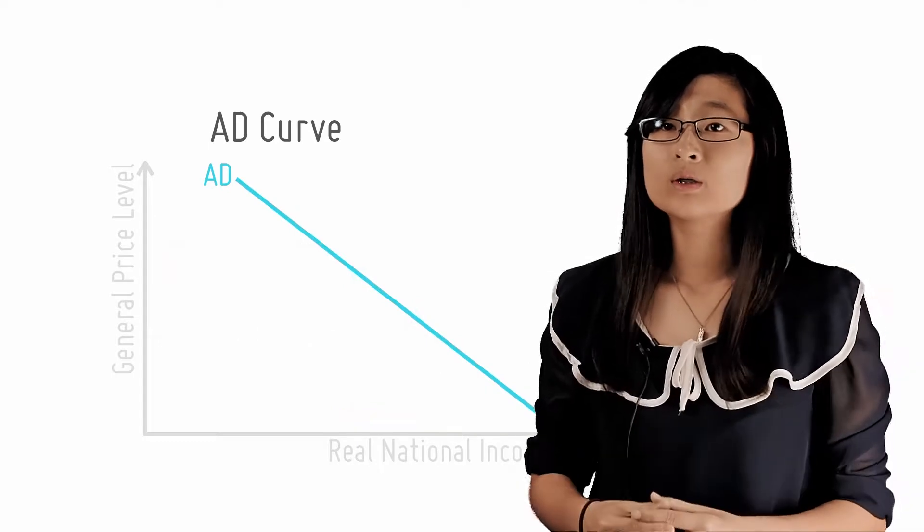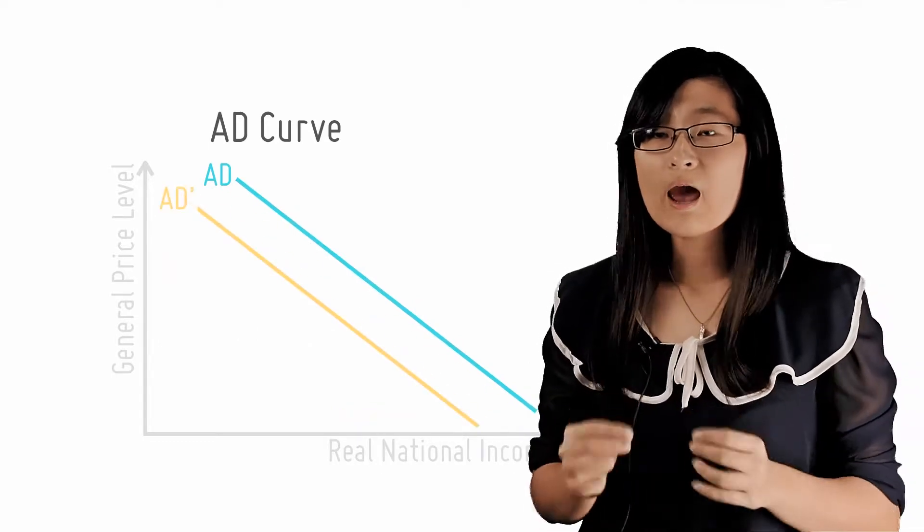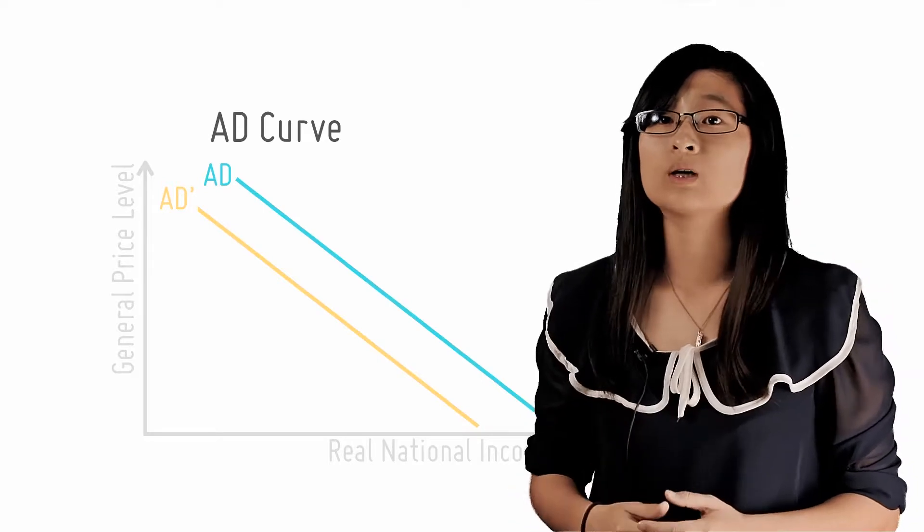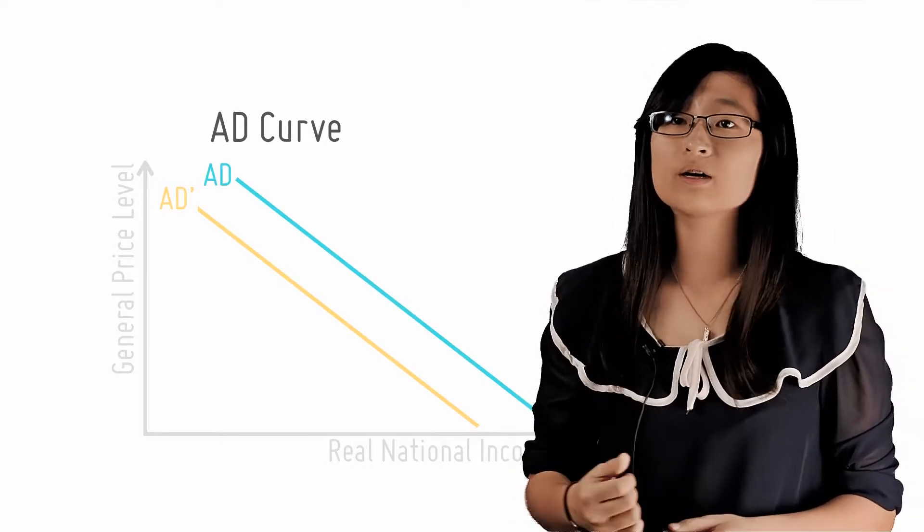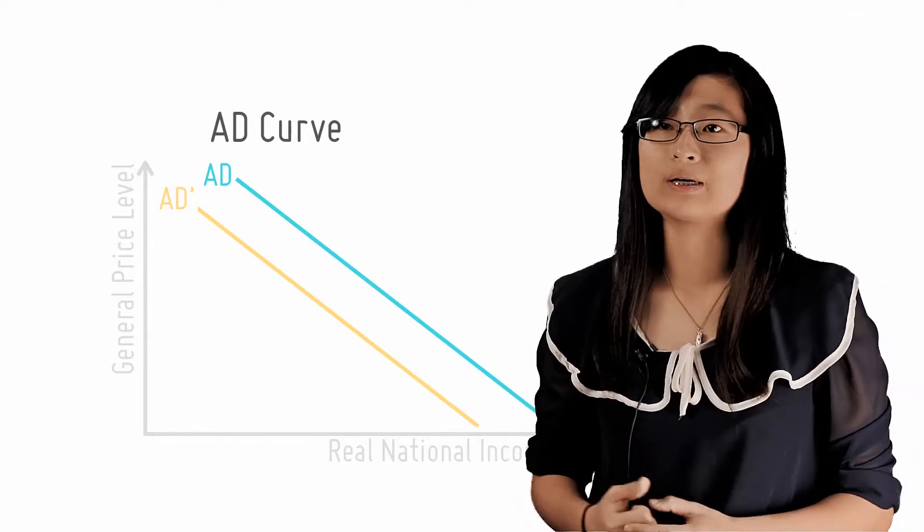When the AD curve shifts, the quantity of goods and services demanded at every price level changes, and the factors that cause these shifts are thus called non-price factors, because their effects are not dependent on the general price level or GPL.